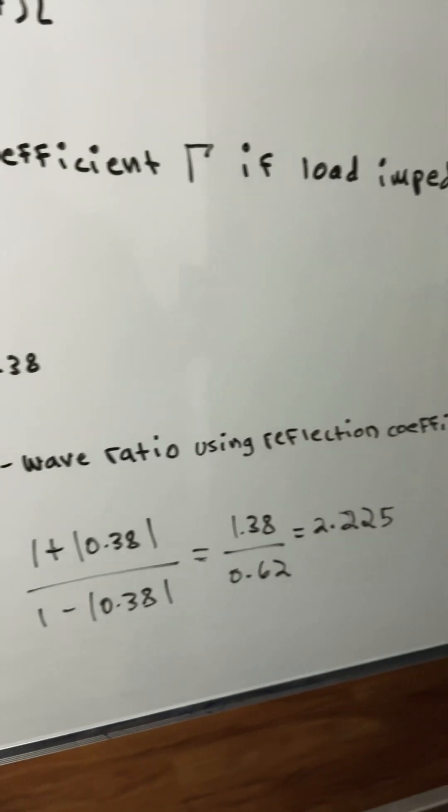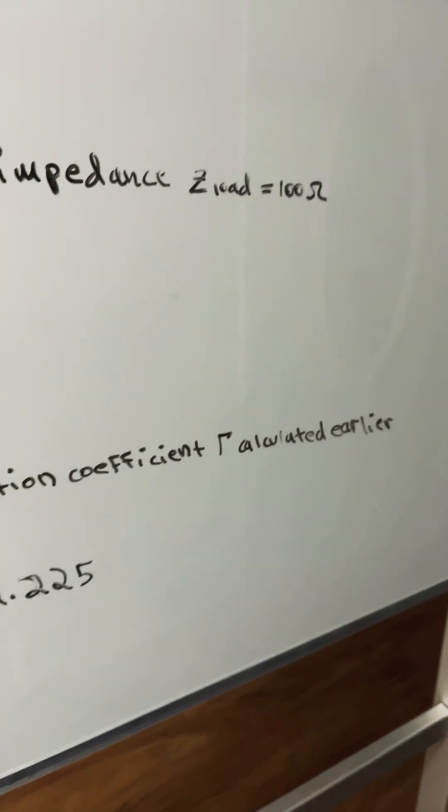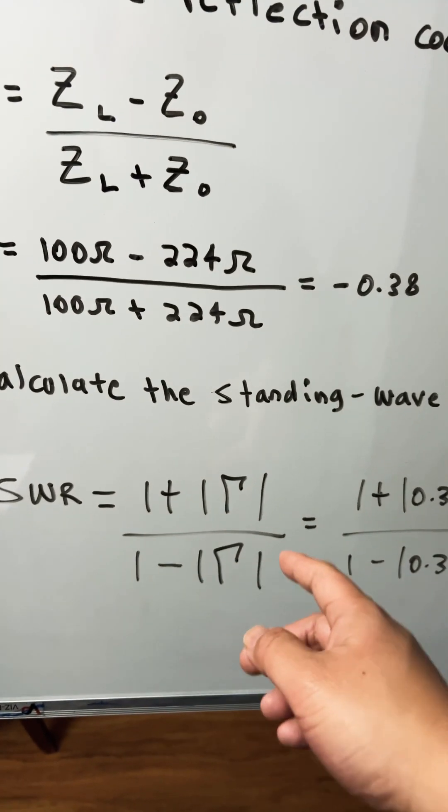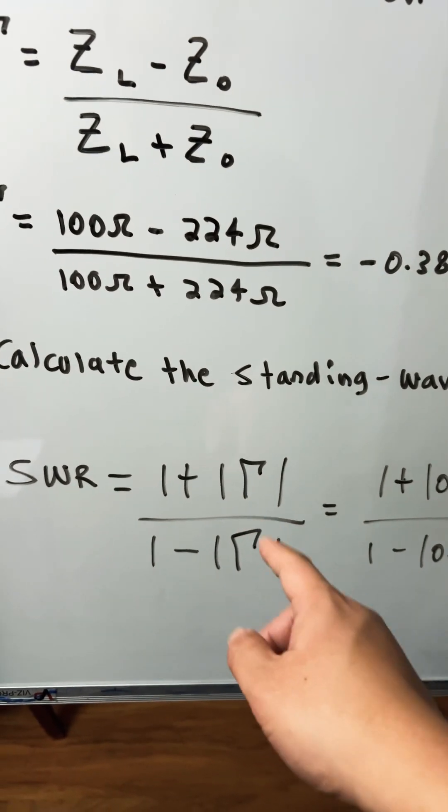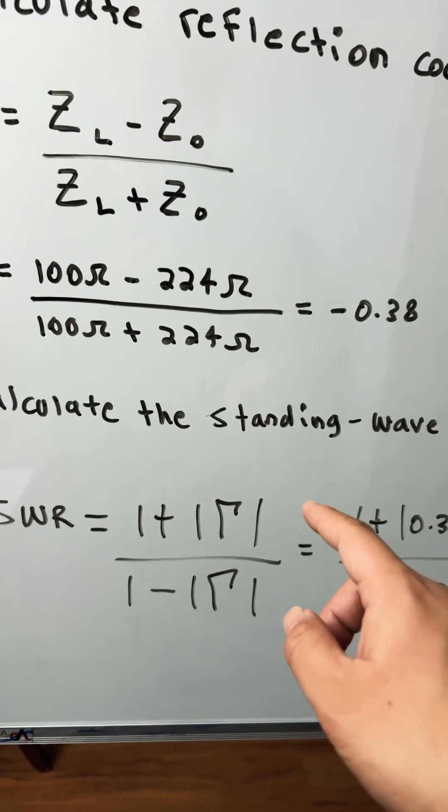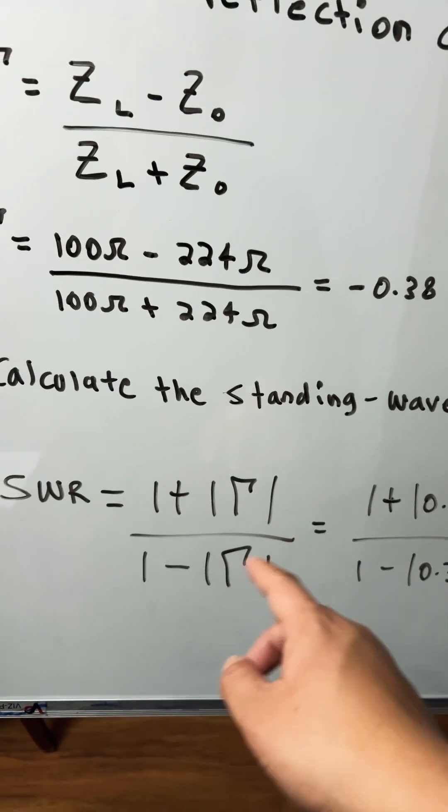Then we will calculate the standing wave ratio using the reflection coefficient which was calculated earlier. This is the standing wave ratio formula, so it's 1 plus the absolute value of the reflection coefficient divided by 1 minus the absolute value of the reflection coefficient.